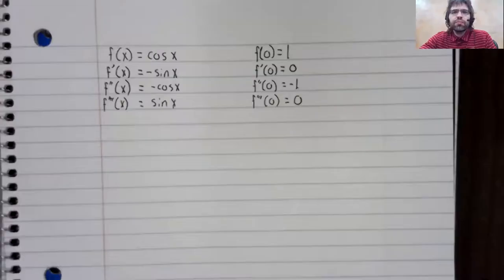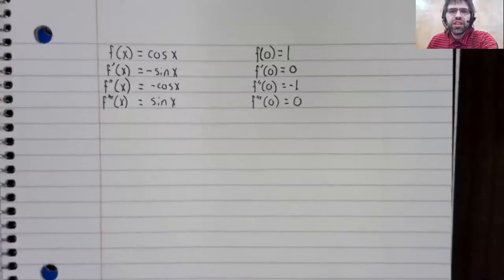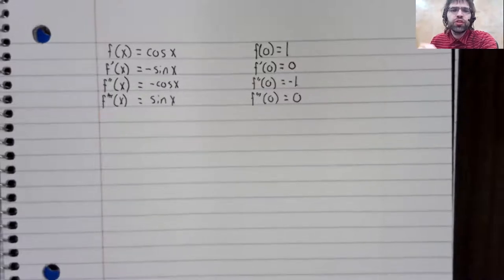This is a little trickier than finding the McClurin series of the exponential function, but the cosine does have a nice property that will let us do this without too much trouble. That property is that the derivatives eventually start to repeat.